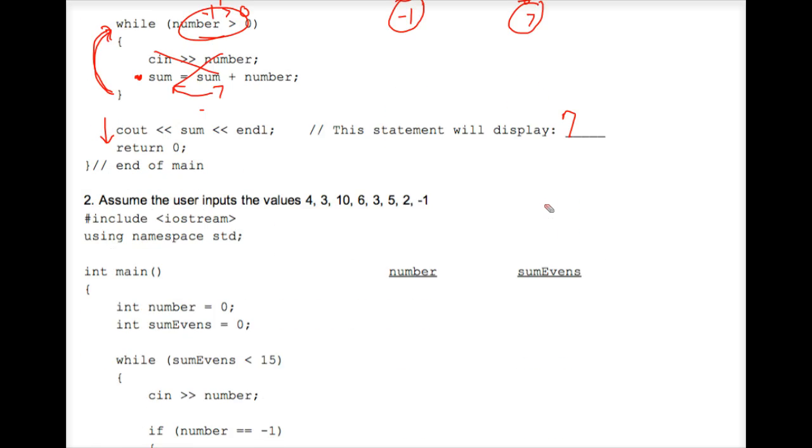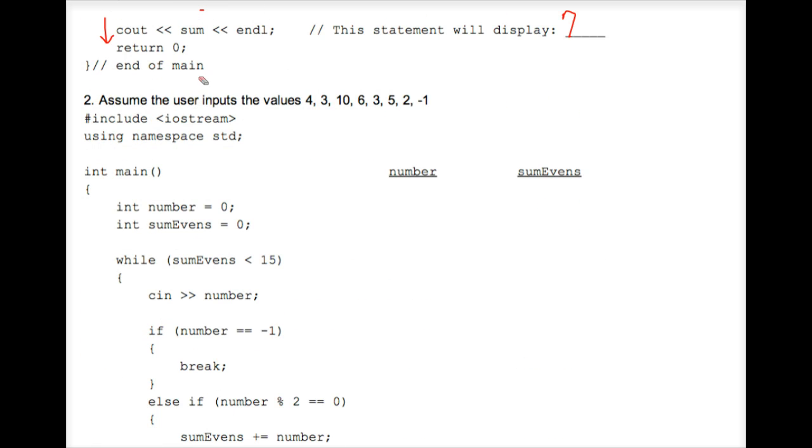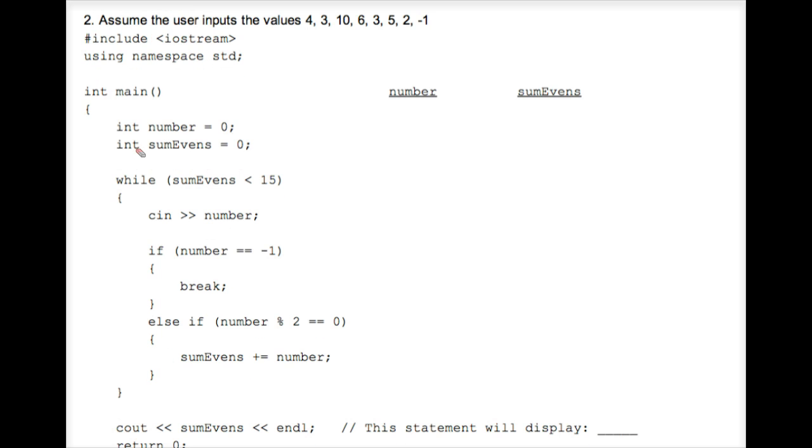Hey, let's take a look at the next exercise that's below this on the same worksheet. Here, we have an interesting situation because we have a while loop that has an if statement and a break within the if statement. I'm going to do this exercise, but again with different numbers. Let's just pretend that the numbers 4, 3, and negative 1 are used. Let's begin. Number is 0, sumEvens is 0, and the control expression is true because 0 is less than 15.